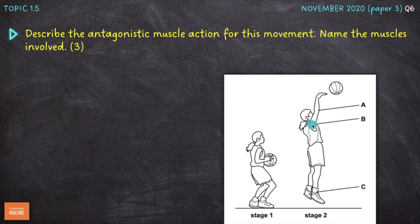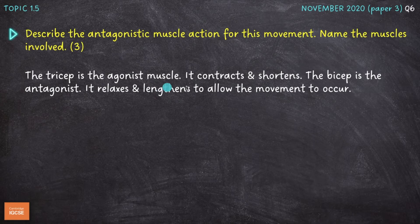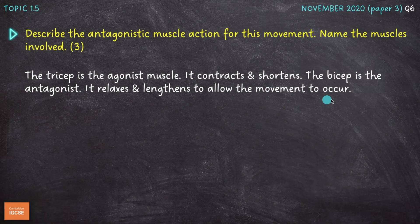And then finally describe the antagonistic muscle action for this movement. So for extension at the elbow we need to describe the antagonistic muscle action. We've already done this exact same question, but here it also prompts us that we need to name the muscles involved as well. And this one's only worth three marks, the previous one was worth four. So let's see where these marks are coming from. I've gone for the tricep is the agonist muscle. It contracts and shortens. And the bicep is the antagonist and it relaxes and lengthens to allow that movement to occur.